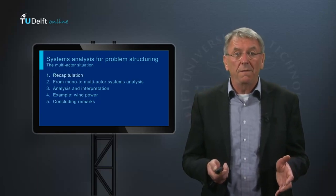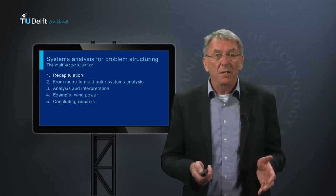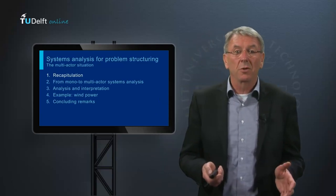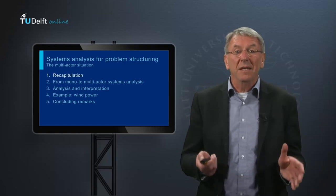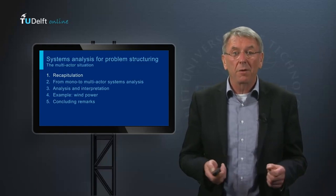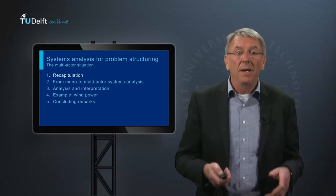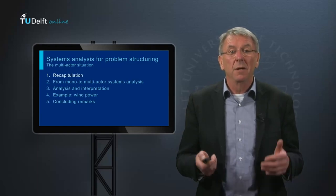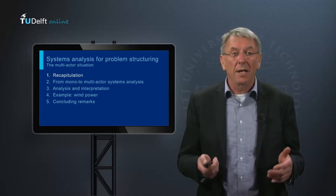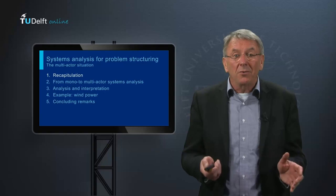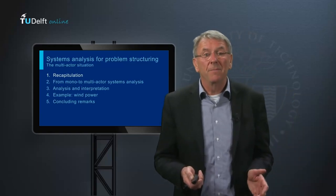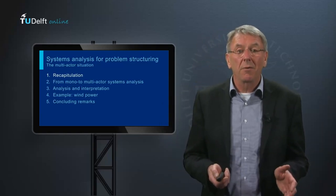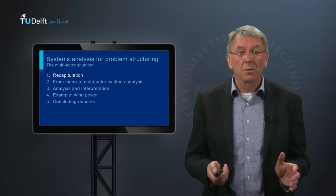In the first video, I explained how systems analysis can help you structure a problem from the perspective of a single actor. You start from the criteria, and then use causal analysis to identify the system factors, means, and external factors. You iterate and check for consistency, and analyze the results using a system diagram as well as a scorecard.